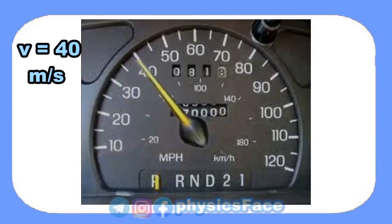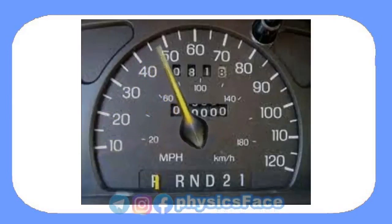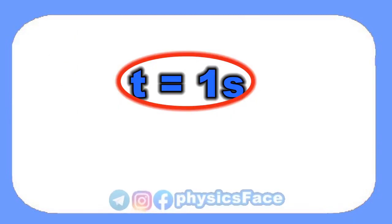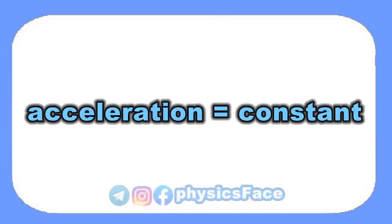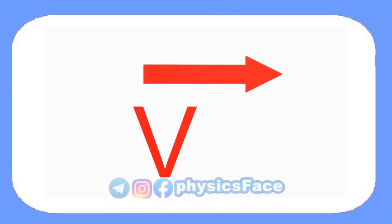Yes, it is true, 40 meters per second and this process continues. You notice, in one second, 10 units are added to the velocity of the object. This means that the acceleration of the object is a constant value. But this sentence needs a lot of explanation.